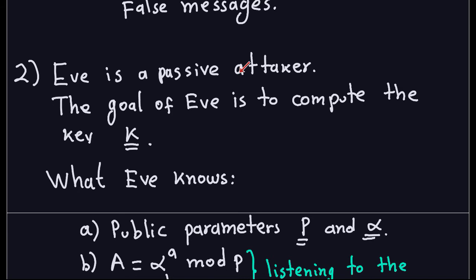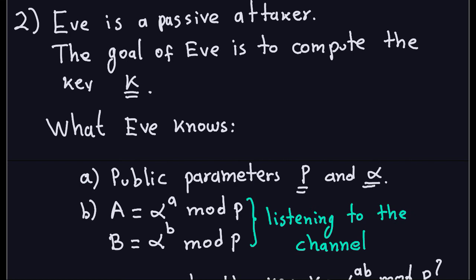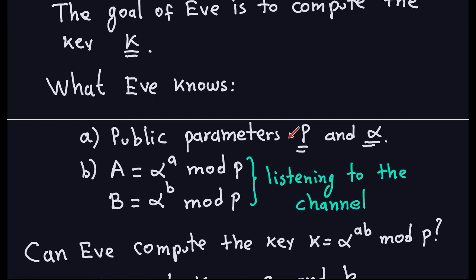If Eve is a passive attacker, her goal will be to compute the key, because once she computes the key she gets access to all the plaintext. In order for Eve to compute the key, she knows a couple of things. One is the public parameters P and alpha — P is the prime and alpha is the generator. She also knows capital A and capital B, which are the messages sent through the insecure channel: alpha to the a modulo P and alpha to the b modulo P, where a and b are the random numbers that Alice and Bob chose from 2 to P minus 2. By just listening to the channel she can get this information, but she only knows capital A and capital B, not the lowercase exponents a or b.